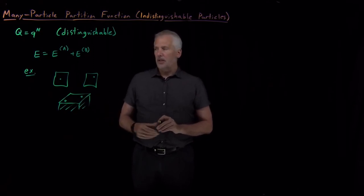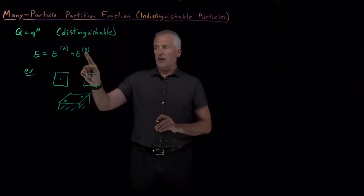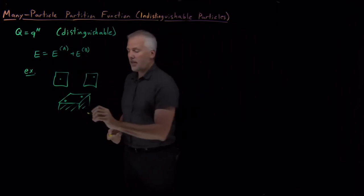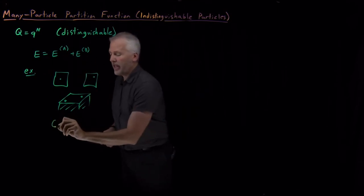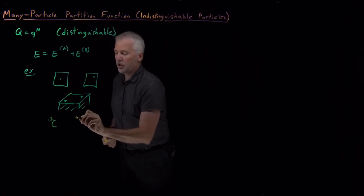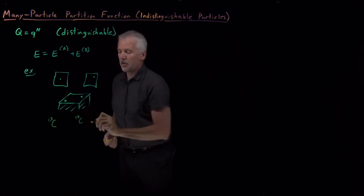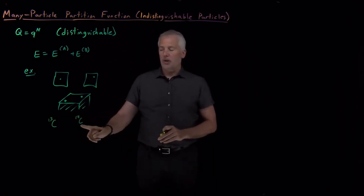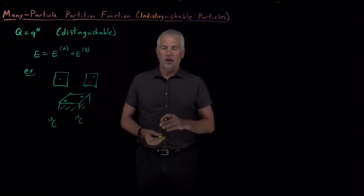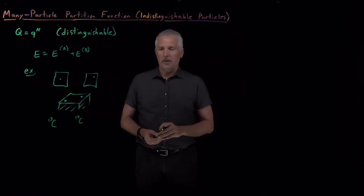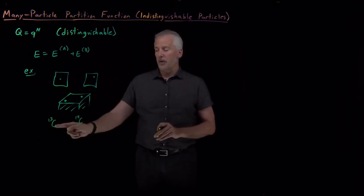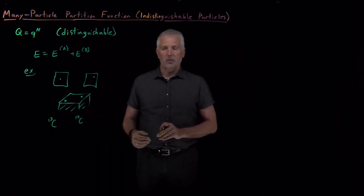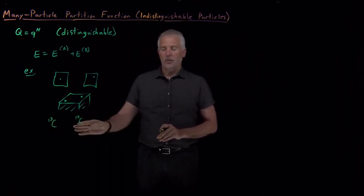Sometimes the label is more literally a label. Maybe particle A contains a different isotope than particle B — for instance, particle A has a carbon-13 isotope and particle B has a carbon-12 isotope. So when making a measurement, if we're measuring the energy of the particle with C-13, that's the one we're calling A; C-12 is the one we're calling B.